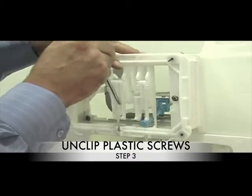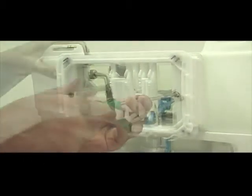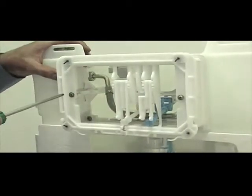Step 3: Unclip the plastic screws from the wall bracket levers. Step 4: Remove the wall bracket with a Phillips head screwdriver. You will no longer require this.